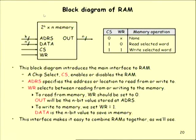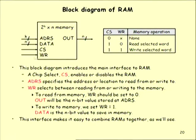A RAM block diagram has address lines (k lines), data-in lines (n lines), data-out lines (n lines), a chip-select signal, and a write signal. Data lines are bidirectional. The slash marks indicate the number of lines. A truth table shows the behavior of the RAM based on these control signals.